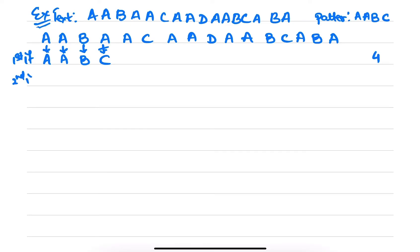Let's move to the second iteration. Pattern AABC — A matches, but B doesn't match. Number of comparisons? 2.